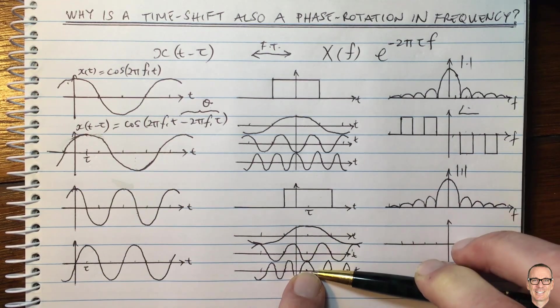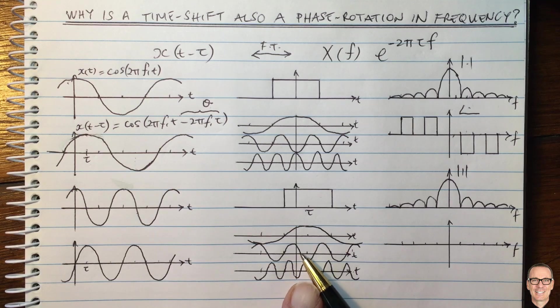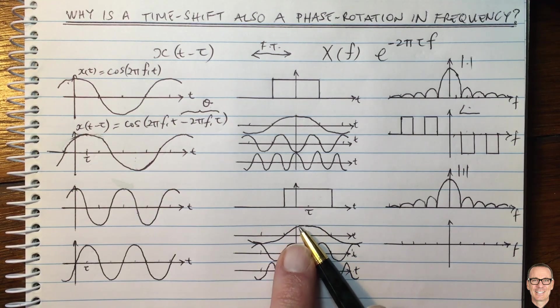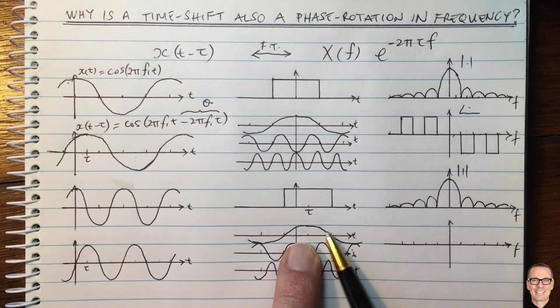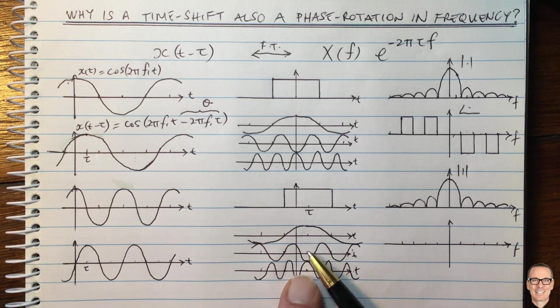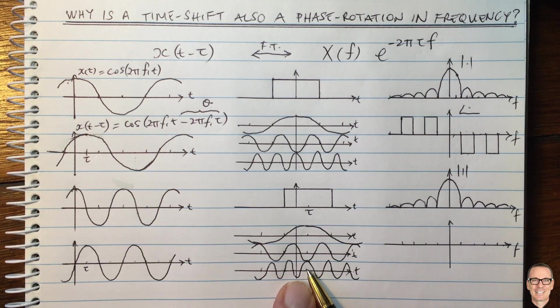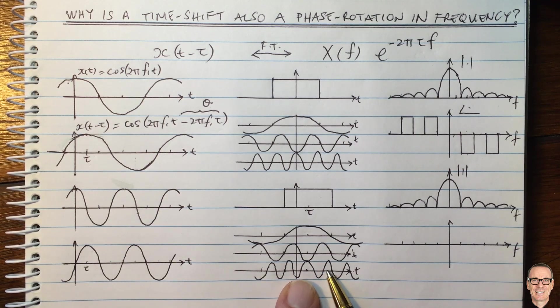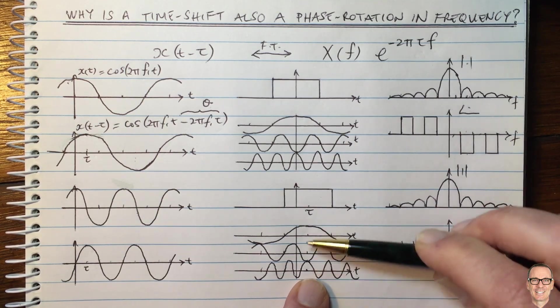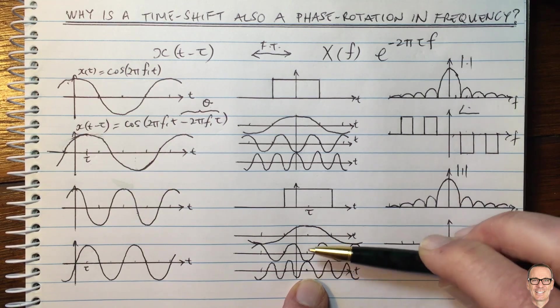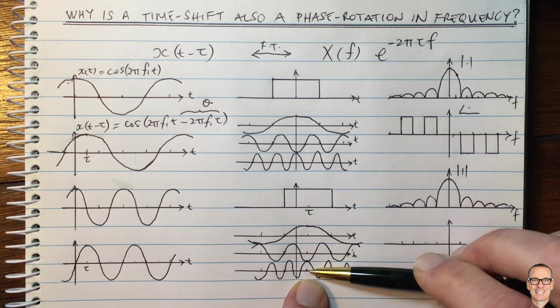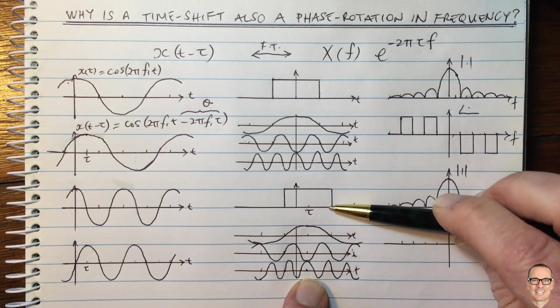The higher frequency components have more of a phase shift. This one here just shifted by a small amount in terms of proportion of its wavelength. This one here shifted by a bigger amount. This one here shifted by an even bigger amount as a proportion of its wavelength. And we can see those increasing phase effects as we go down the components that make up this waveform.